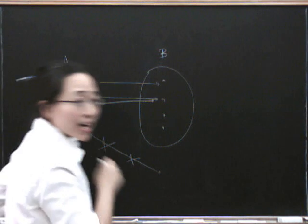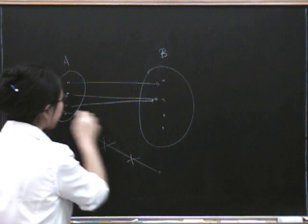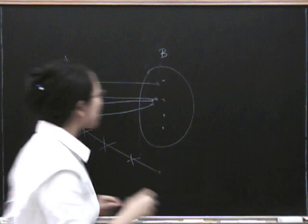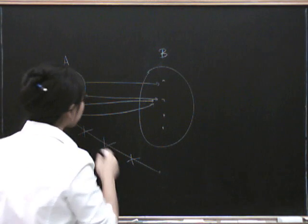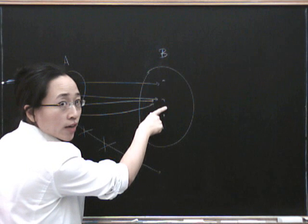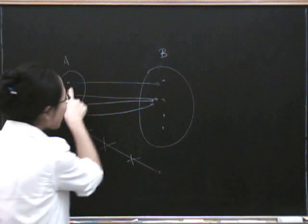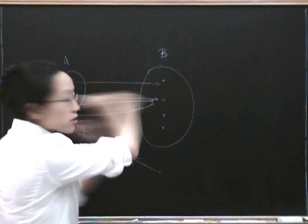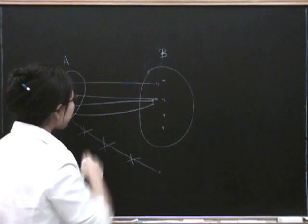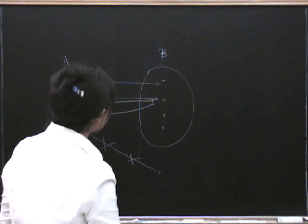Also, everything on the left has to go somewhere on the right - points over here that don't go anywhere are not allowed. But here are two things that are allowed: we are allowed to have lots of points on the left going to the same point on the right. We're not allowed to have one point on the left going to two different places on the right.